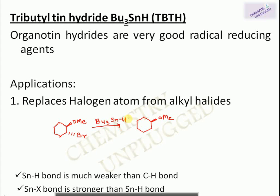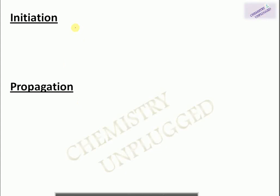This happens because the Sn–H bond is much weaker than the C–H bond. Additionally, the Sn–X bond is stronger than the Sn–H bond, so the Bu₃Sn radical preferentially attaches to the halide. As a result, Bu₃SnX is removed from the reaction, and the C–H product is formed.